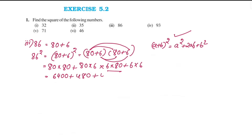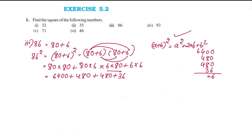Expanding: 80 × 80 plus 80 × 6 plus 6 × 80 plus 6 × 6, giving 6400 plus 480 plus 480 plus 36. Adding: 6400 plus 480 is 6880, plus 480 is 7360, plus 36 gives 7396. So 86 squared is 7396.